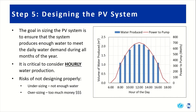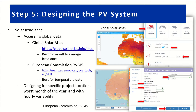Solar energy also depends on your location in the world, so it's essential to download specific irradiance and temperature data based on your project location. You can access global data from the Global Solar Atlas or the European Commission PVGIS. Both links are shown there, and we have a separate video which shows how to download and access this data.